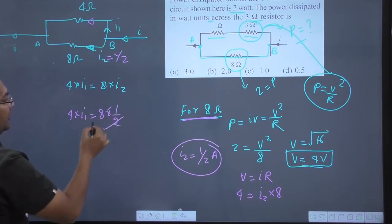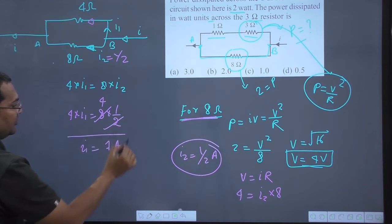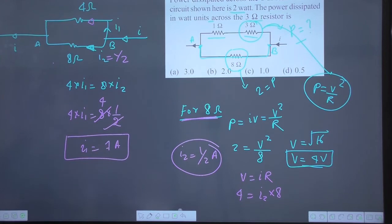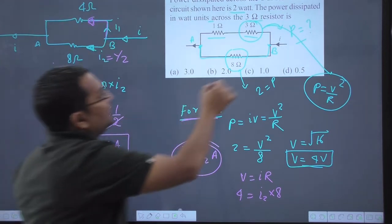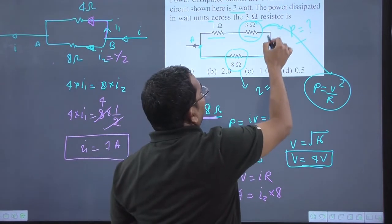From the equation 4 times I1 equals 8 times I2, I1 equals 1 ampere. So I get 1 ampere current here, 1 ampere flows in this branch.